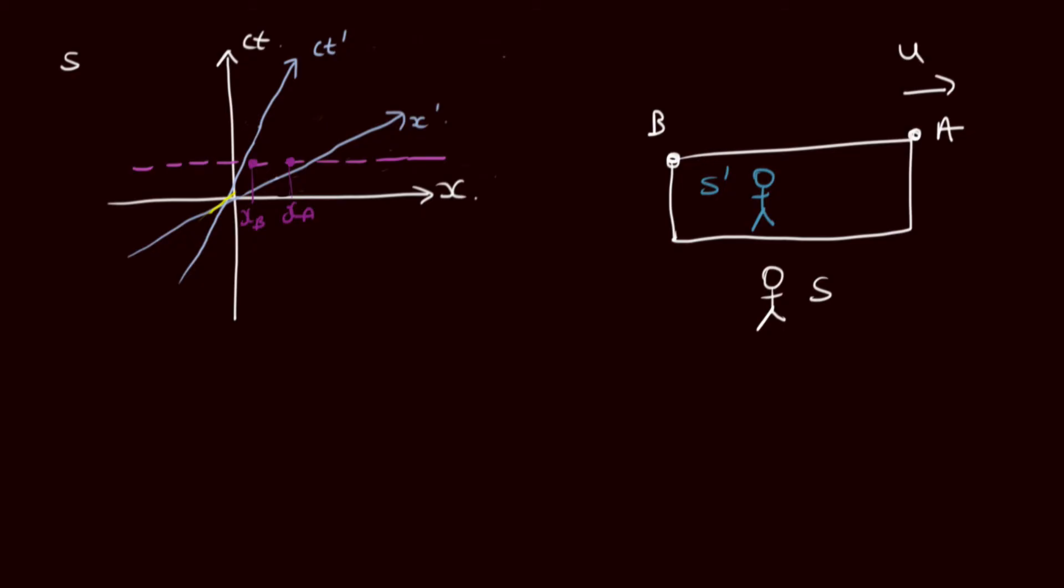If we want to work out if they happen at the same time in CT prime, we'll need to trace these down to intersect with the CT prime axis, and we can see that event A happens here and event B happens here. Event A happens at an earlier time than B. We can see from our space-time diagram that these two events do not happen simultaneously.